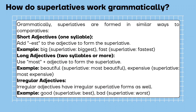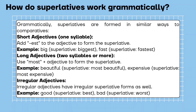Long adjectives, two syllables or more: use most plus the adjective to form the superlative. Example: beautiful — superlative: most beautiful. Expensive — superlative: most expensive. Irregular adjectives have irregular superlative forms as well. Example: good — superlative: best. Bad — superlative: worst.